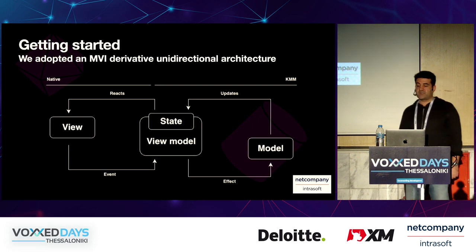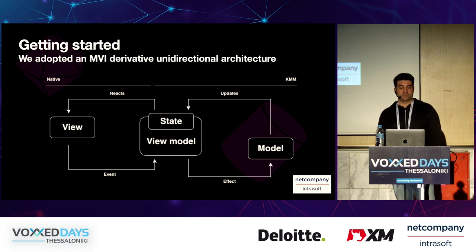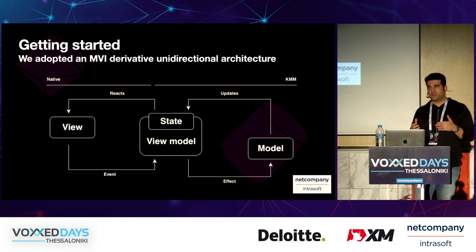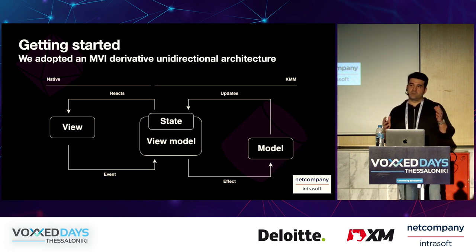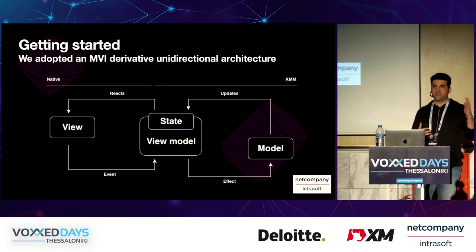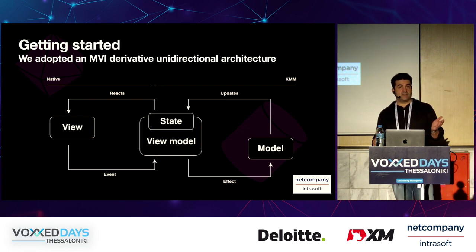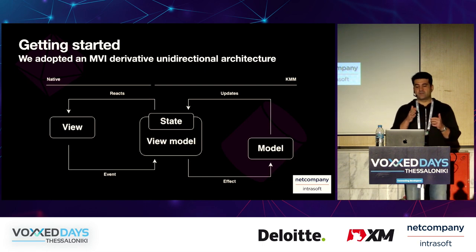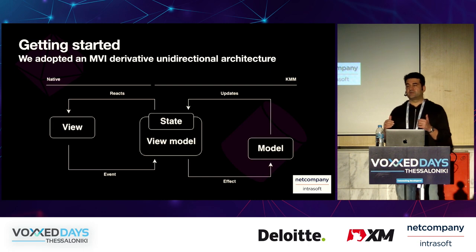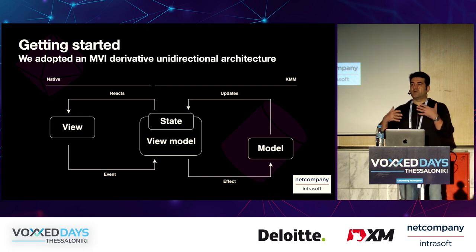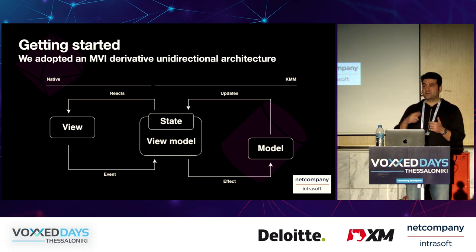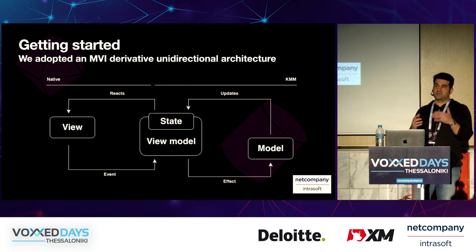We use MVI — Model-View-Intent — for unidirectional architecture. This system contains three actors: View, View Model with State, and Model. The View is the UI layer. The View Model contains the state and is your presentation layer. Everything below — business logic and data layer — is managed by the Model. A view causes an event onto the view model. The view model causes an effect on the model, which gathers data or carries out business functions, updates the state, and the view reacts to the state change.